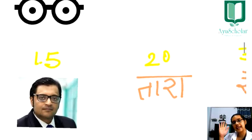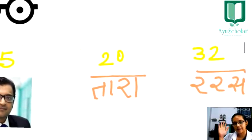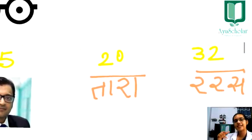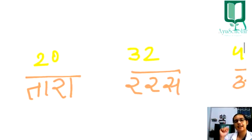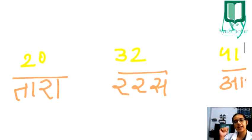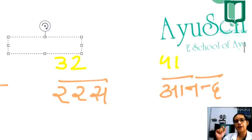After that comes Tara, meaning Tarangini — Ras Tarangini has described 20 Yantras. After that comes Ras Ratan Samucchaya, in which 32 Yantras have been described.